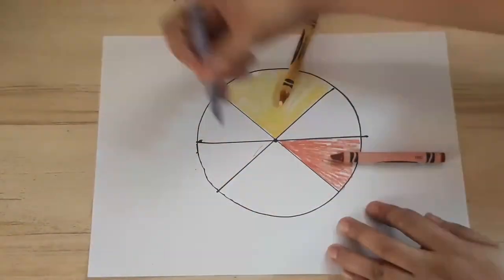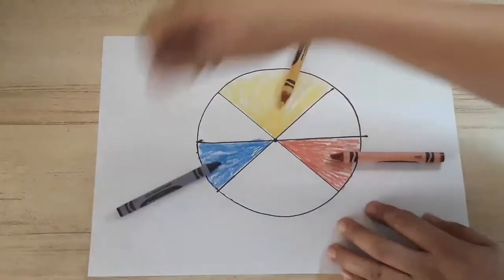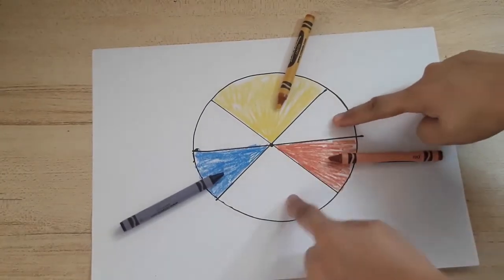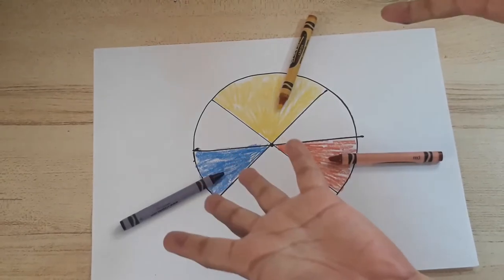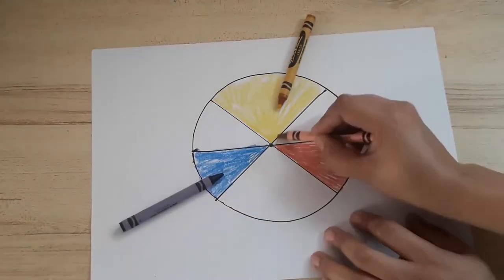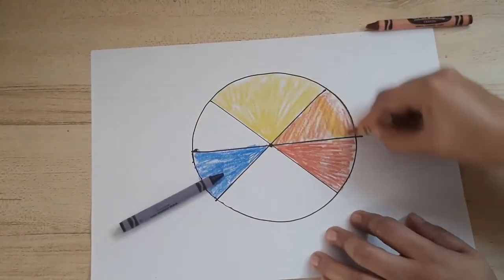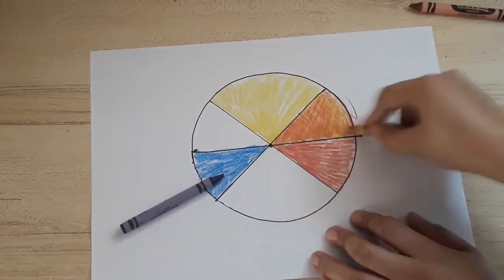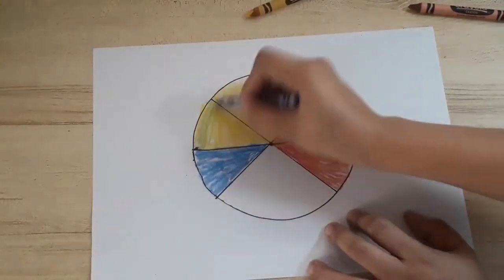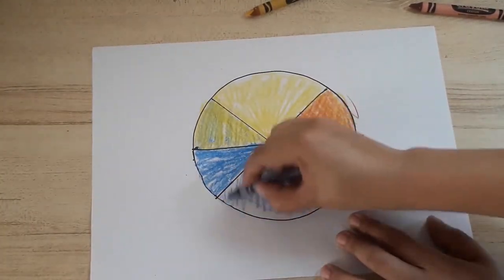There should be space between one primary color to another primary color. Once you've finished, you will notice those spaces between primary colors. Fill them in with secondary colors. Remember, red plus yellow is orange, so put orange between yellow and red, and so on.